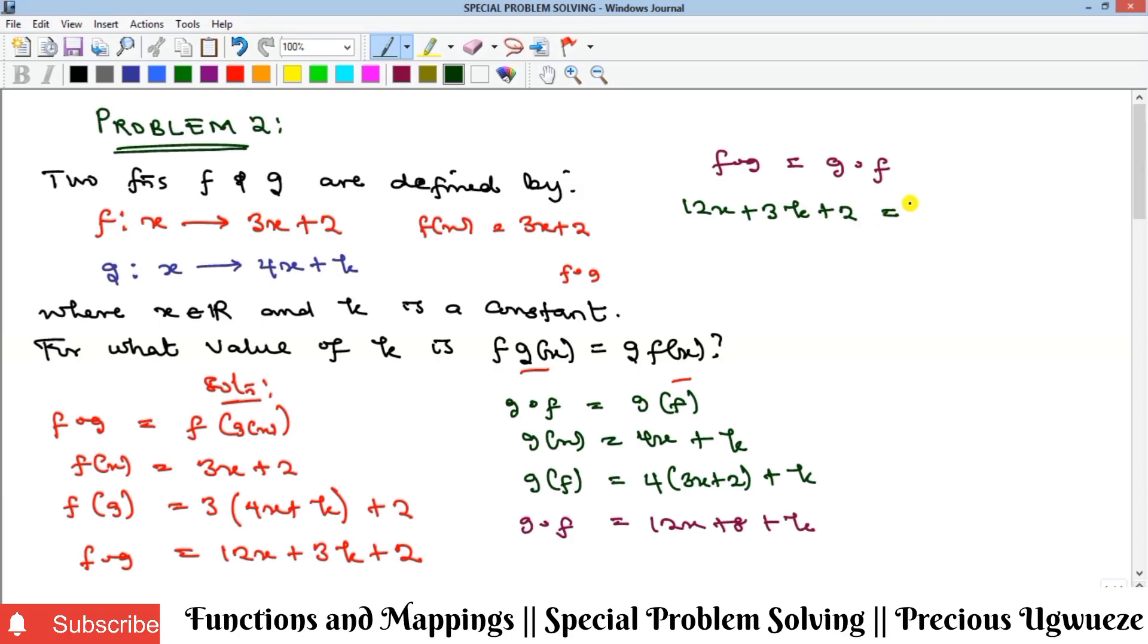We look at both sides: there's 12x here, 12x here, these cancel out. We collect like terms. That gives us 3k - k equals 8 - 2, so 2k equals 6. Therefore, k equals 3, and that's the required solution.